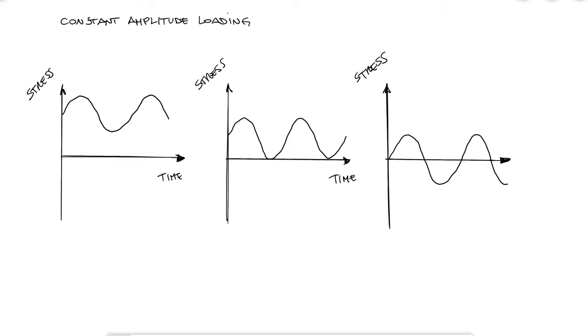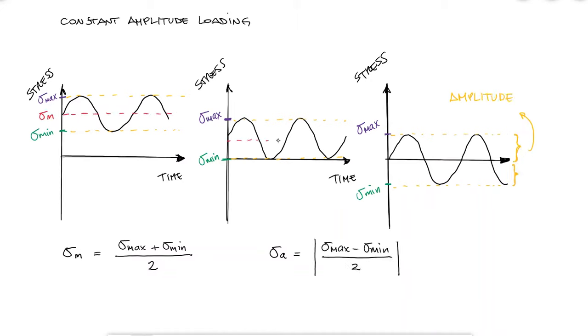The mean stress is written as sigma m, and it's the average between the minimum and the maximum stress, and the alternating stress or stress amplitude is the amplitude, or the distance between the minimum and the maximum stress over two. We call fluctuating stresses of constant amplitude a completely reversed stress when the mean stress is zero, since the minimum stress value is just a negative value of the maximum stress.